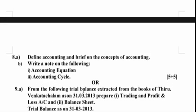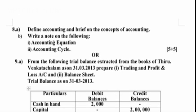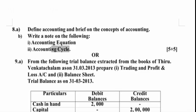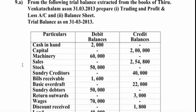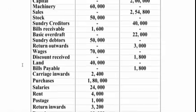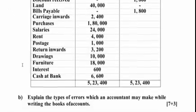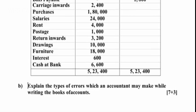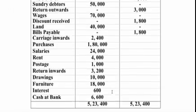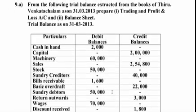The fourth unit question covers defining accounting, brief accounting concepts, the accounting equation, and the accounting cycle. The fourth unit will definitely include a problem, and if it is a problem you will get a straight 10-mark problem. Carry your calculator to the examination. The problem may sometimes be purely numerical or may include a small equation or a theory component. Topics to prepare include trial balance extract, books of accounts, trading and profit and loss accounts, and balance sheet.